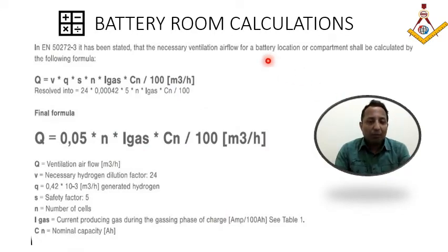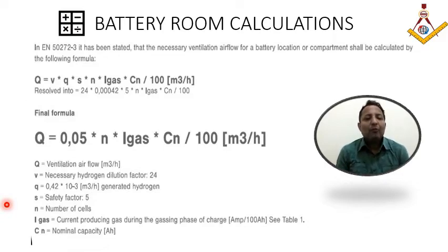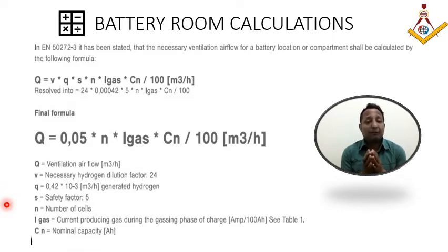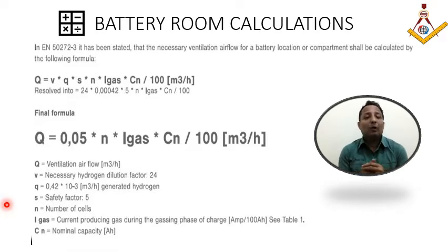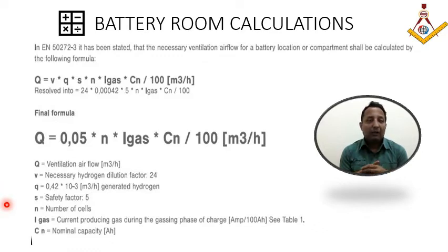The battery room is a very important aspect as far as marine offshore oil and gas is considered. The battery room basically consists of batteries which are normally for the UPS system. The batteries play a very important role to have uninterrupted power, so the batteries always need to be charged. And when battery charging is required, it releases a certain amount of hydrogen, and hydrogen is a hazardous gas.